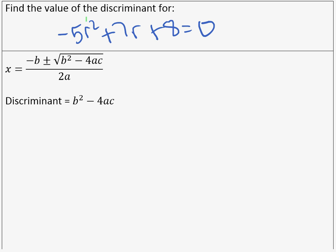Now, the discriminant is part of our quadratic formula. This is the discriminant, and it can tell us very important things about our answer. But right now, we're just going to practice finding it. So we're going to use this formula, which is just what's underneath the radical.